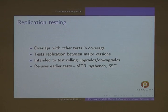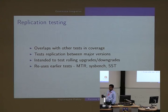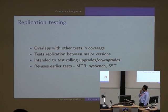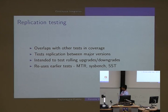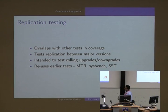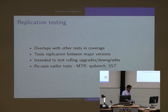Finally, there's replication testing. There is a degree of overlap with other tests here. This is basically to test replication between major versions like 5.5 and 5.6 and vice versa, to facilitate rolling upgrades which can be very hairy at times. So this is for testing upgrades and downgrades. It reuses earlier tests like MTR and SST - it starts a node, loads data, starts a second node, SST happens, then you upgrade one node, shut it down, bring it back up, and run queries to make sure everything works.